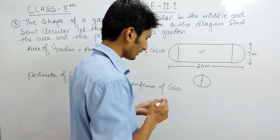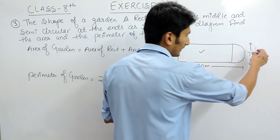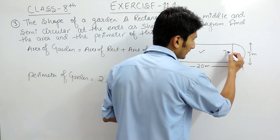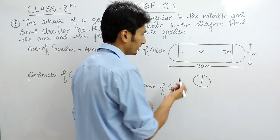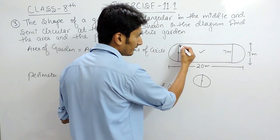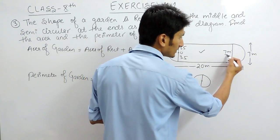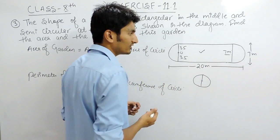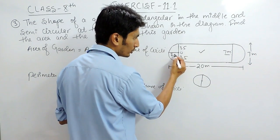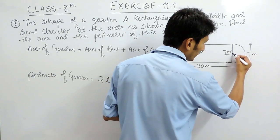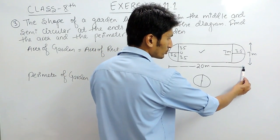Now let's find the area of the rectangle. To find the area we must know the length and the breadth. The breadth is given as 7 meters. The midpoint or center of the semi-circle gives a radius of 3.5 meters on each side, since the diameter is 7. So the radius is 3.5 meters on both ends. The total length of the garden is 20 meters.